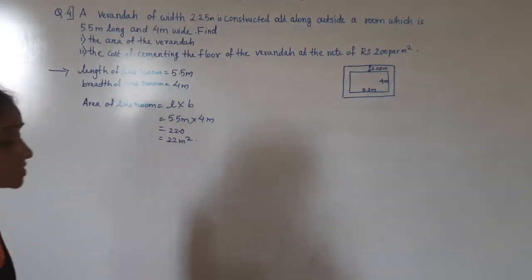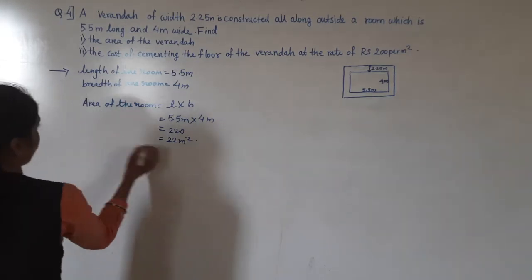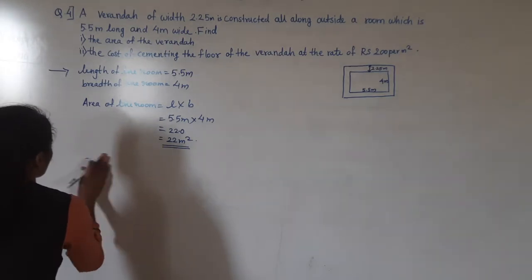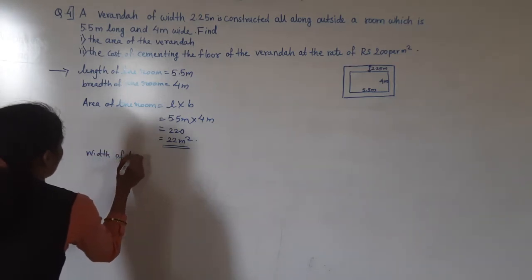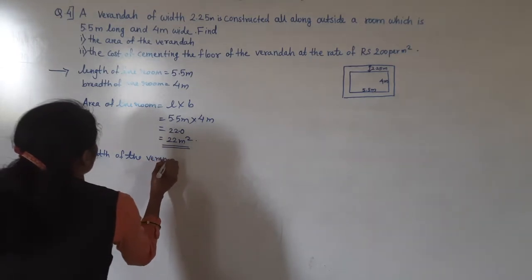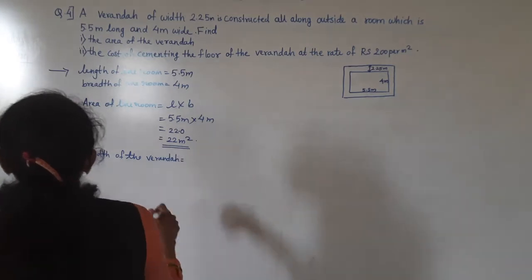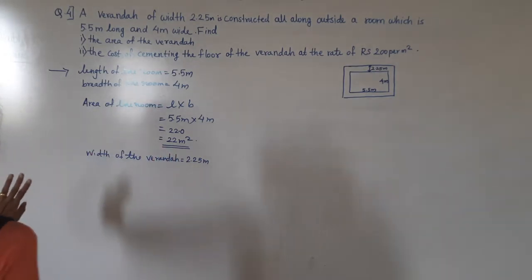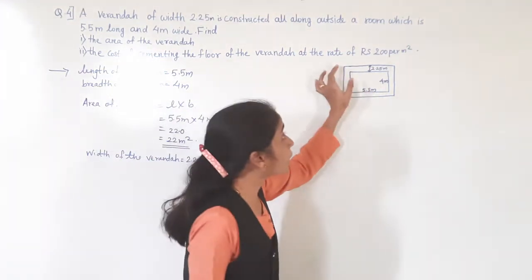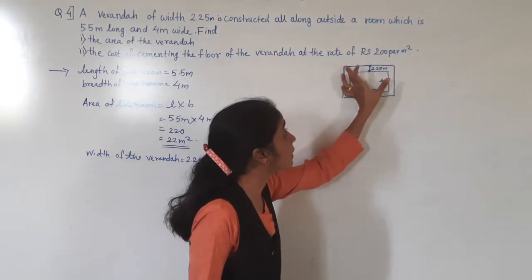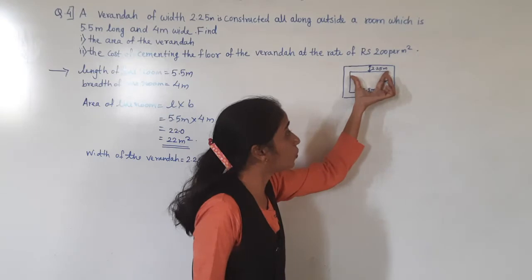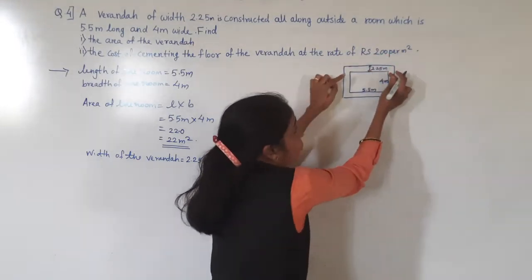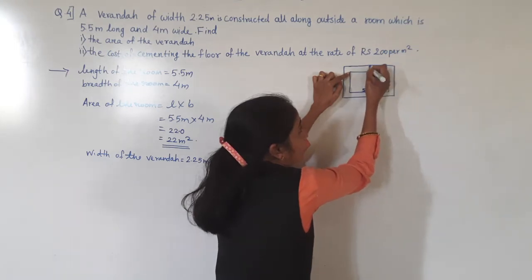Now it is given: width of the veranda is 2.25 meters. Now we have to find the length of the room including veranda. This length we have to find — the room's length is 5.5 meters, but now we have to find the length of the room including veranda.